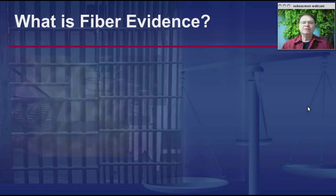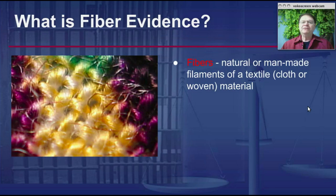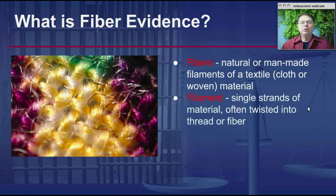What is fiber evidence? Take a look at this photograph. Fibers are any type of natural or man-made filaments of a textile, be that cloth or woven material. When we use the term filament in this context, we're referring to those single strands that you can see in this photograph that are twisted together to produce thread or fiber.